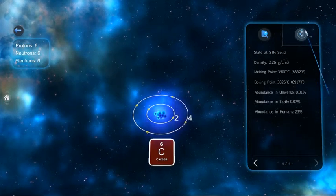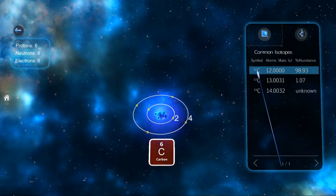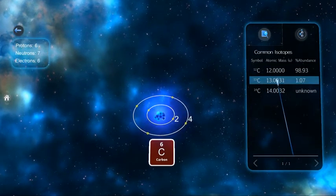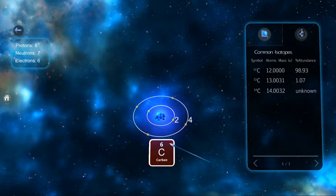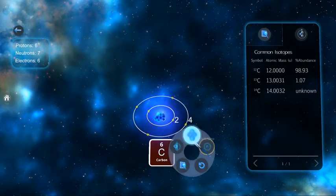In the second tab at the top, we can see common isotopes of this element. Kind of like if carbon had a different haircut. By the way, while we're in detailed view, we are still able to change the view of the element.